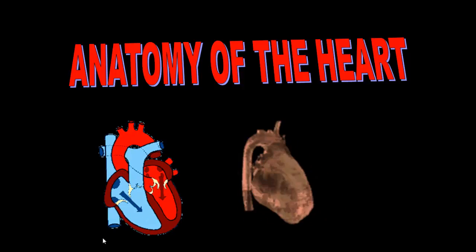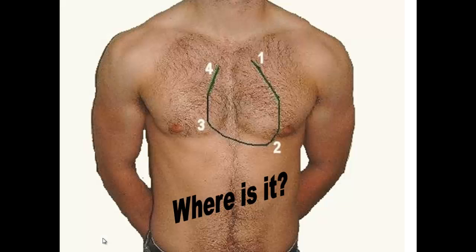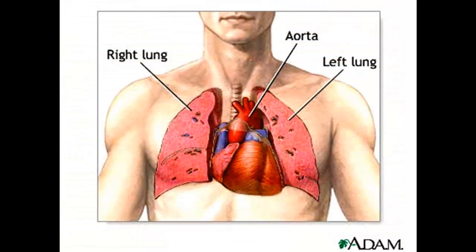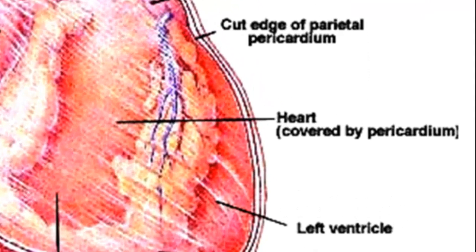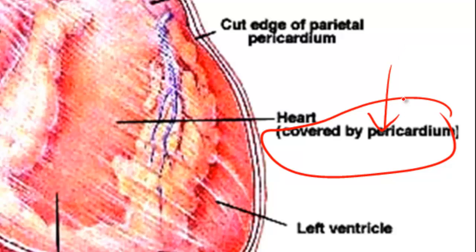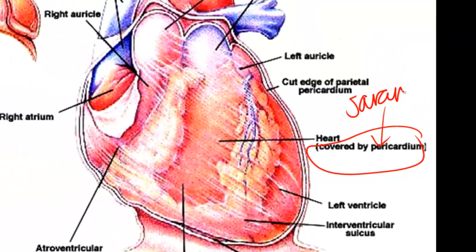Today we're going to be focusing on the anatomy of the heart. So where is your heart? It is right here. And if you look at it with the lungs involved, here's the heart. You've got your right lung and your left lung — the right lung is a little bit larger and has three lobes compared to the left lung. If you look closely at the heart inside a body, you'll notice it's wrapped up with this saran wrap-like tissue called the pericardium, which just protects the heart.